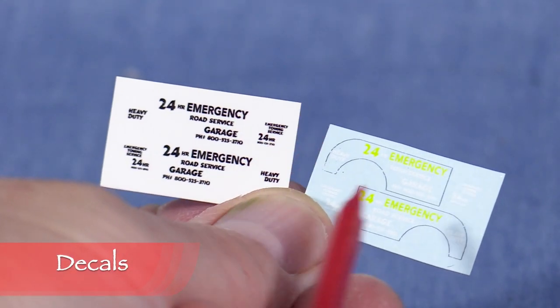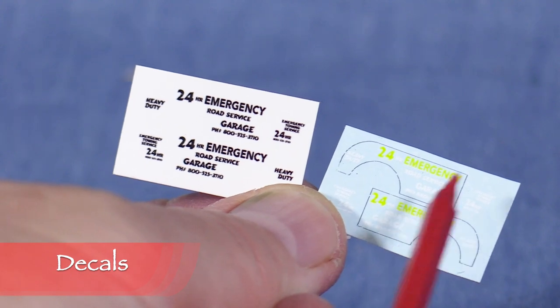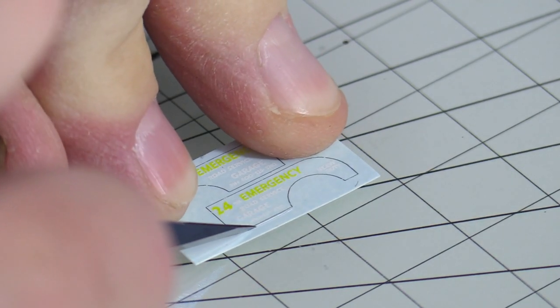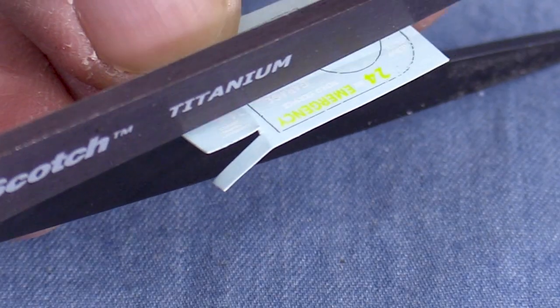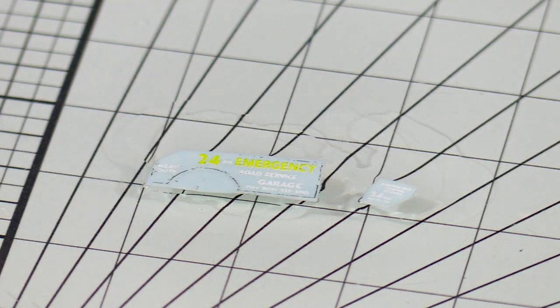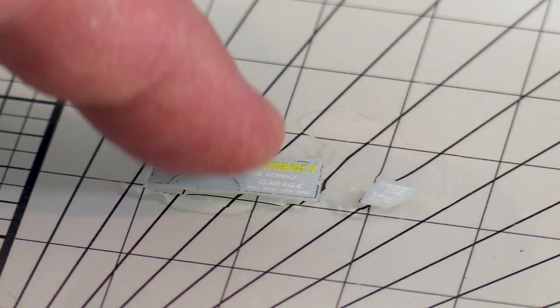The interior seats get some Testers Model Master leather. Since I painted the truck red, I think the decals with the white and yellow lettering will show up better than the black. After cutting the decals to size, I'll put them on a piece of plate glass. A drop of water will help to release them from the backing sheet. I'll work on one side at a time.